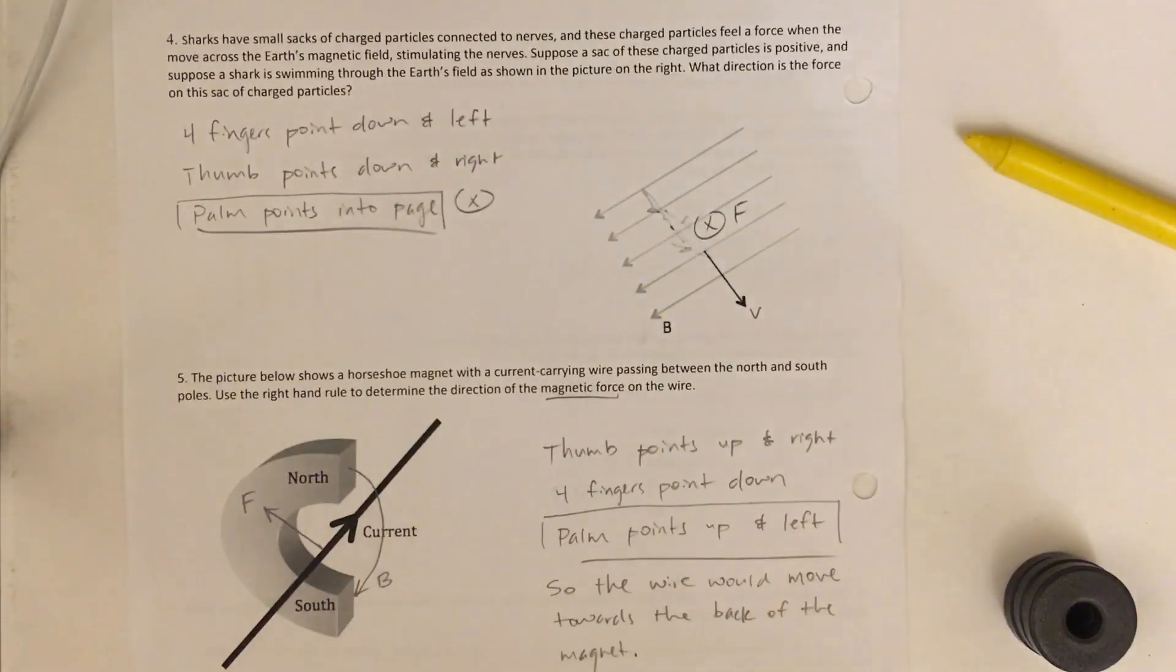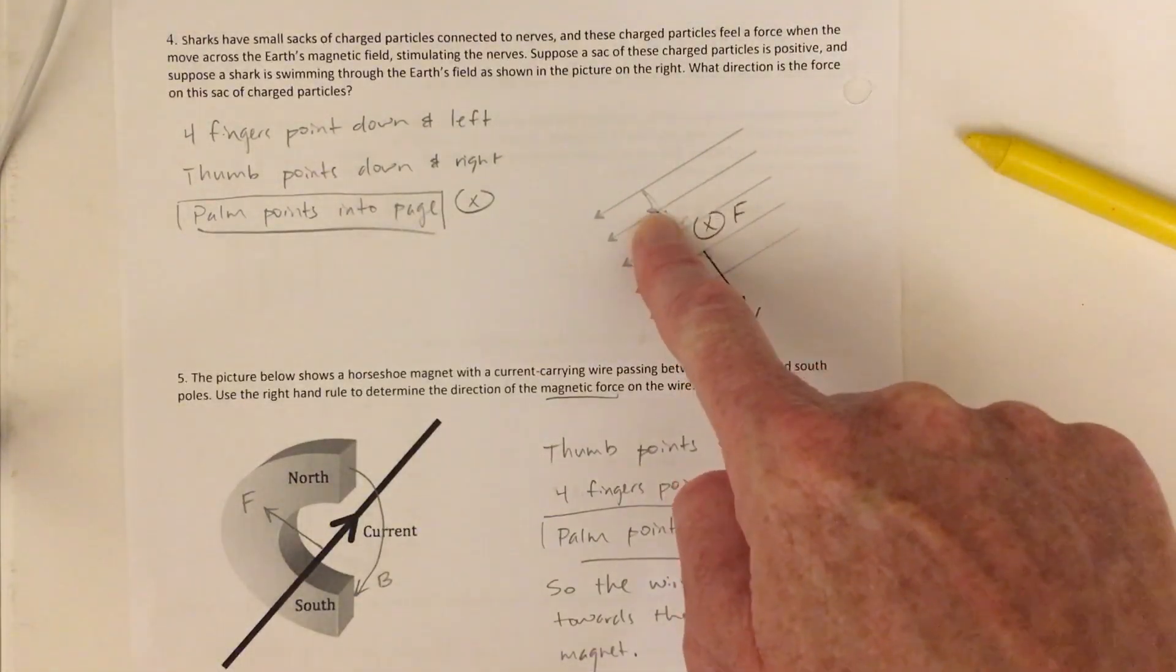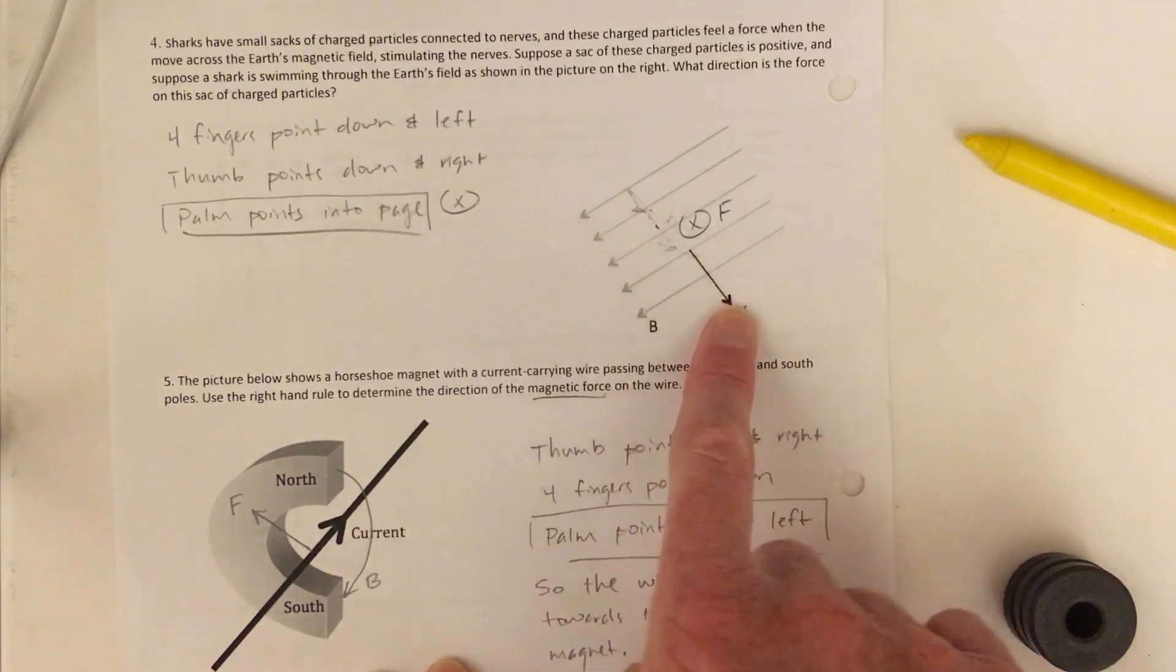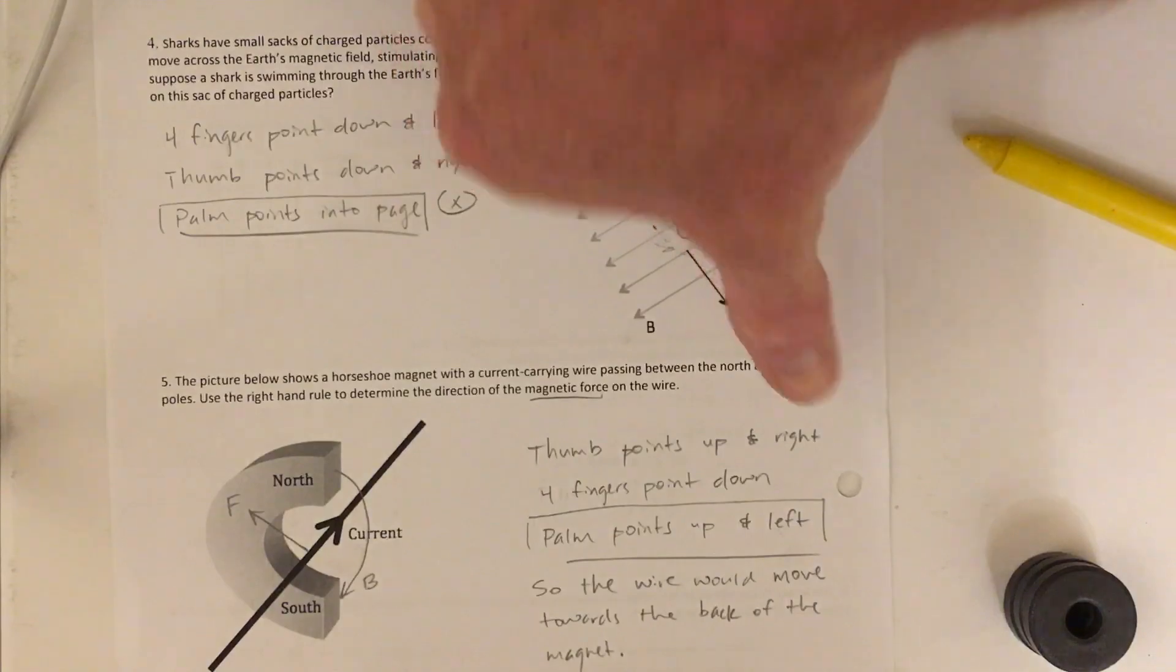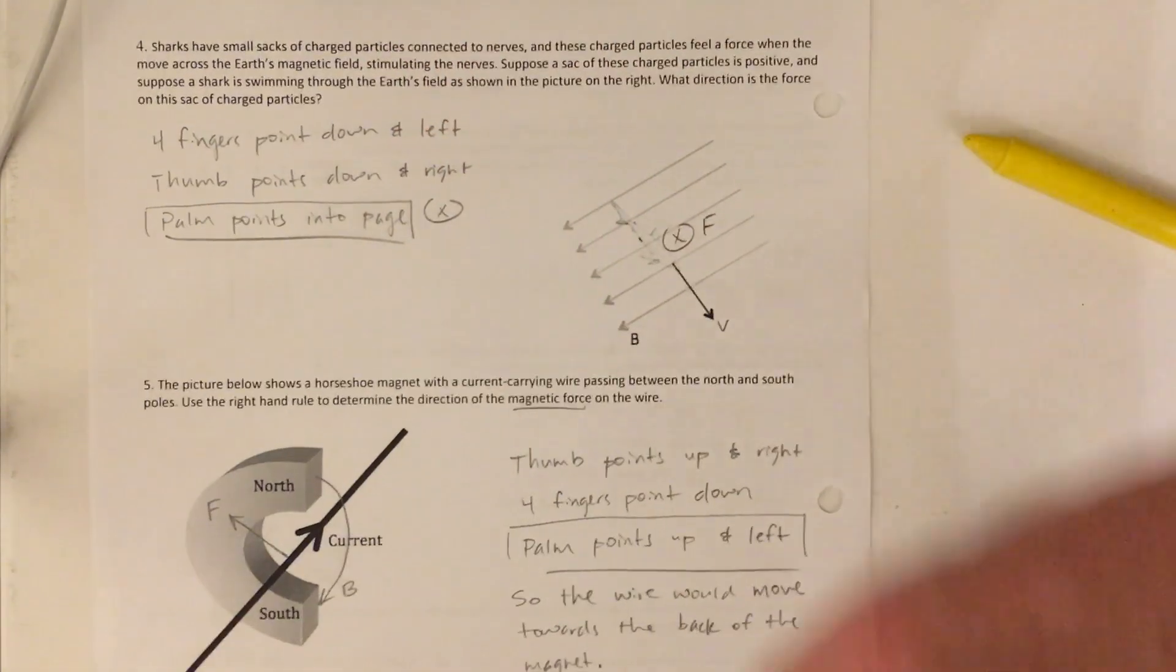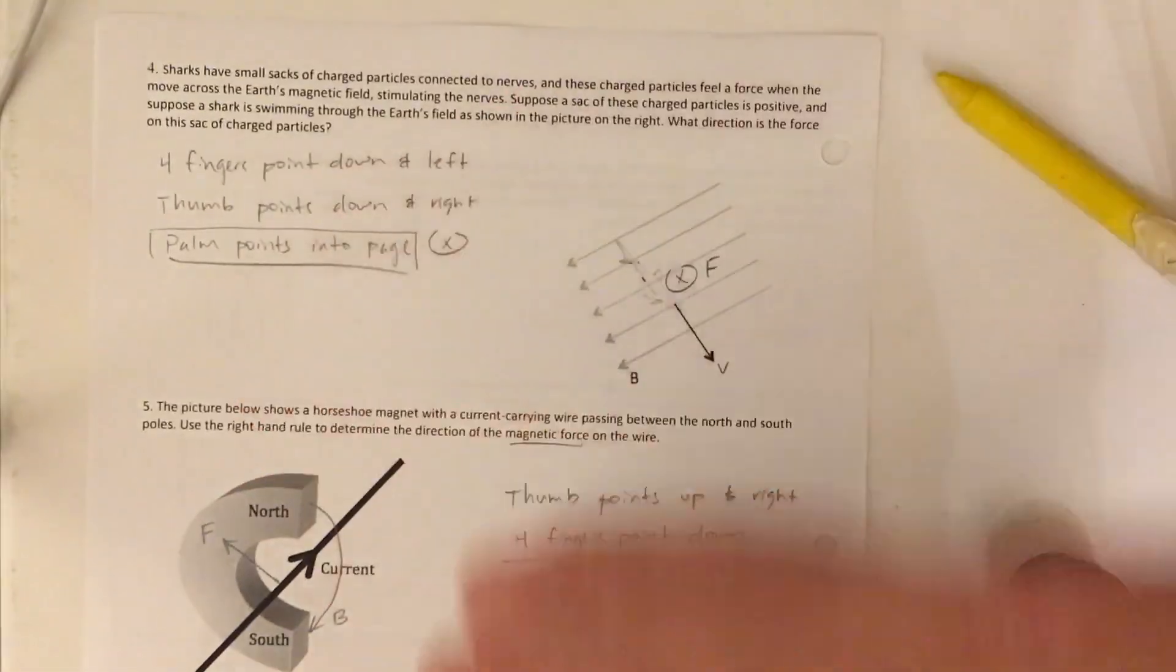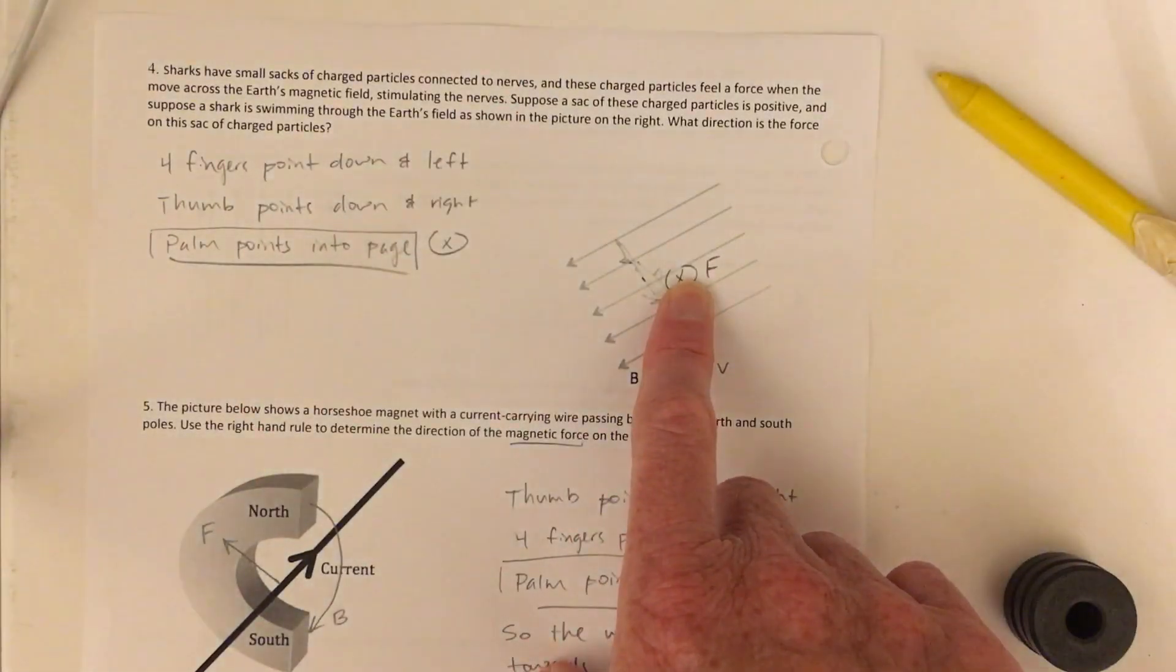Number four, magnetic field lines are pointing down into the left. So I'm going to go this way. The shark is going down to the right. So that's the velocity of the particle this way. And so to do both at the same time, I hold my hand like this. And then my slap is into the page. So that's the force going into the page.